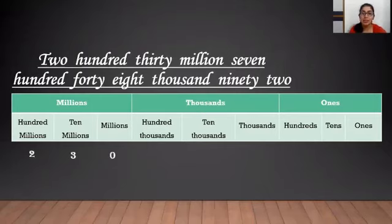Next, we will have 748,000. So, for the thousands period, we will write 7, 4 and 8. Lastly, we have 92.